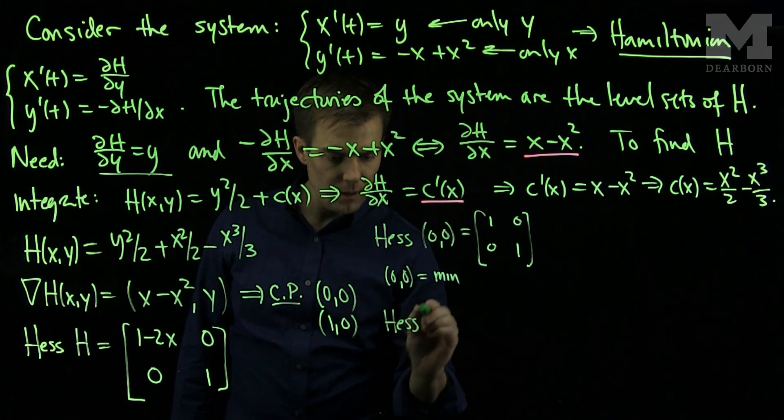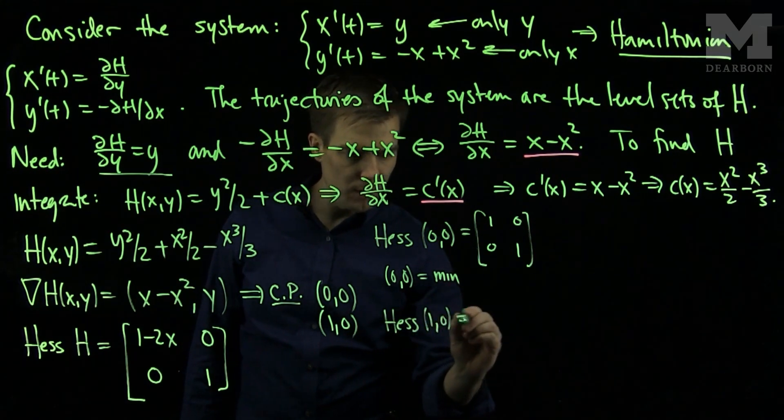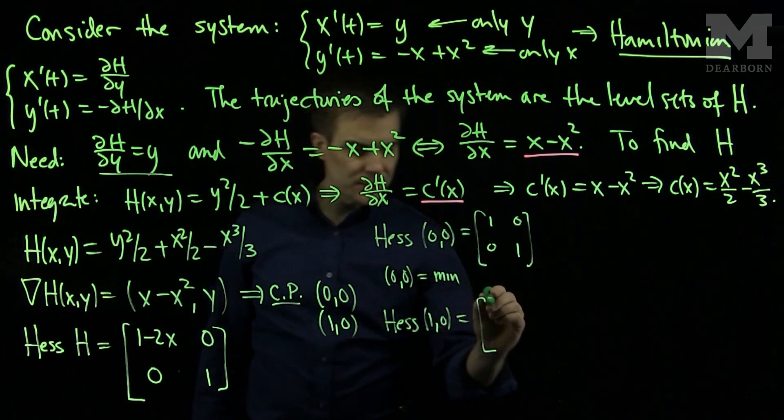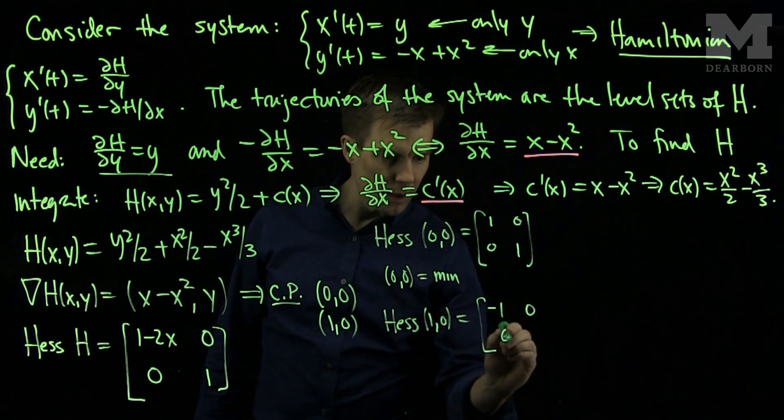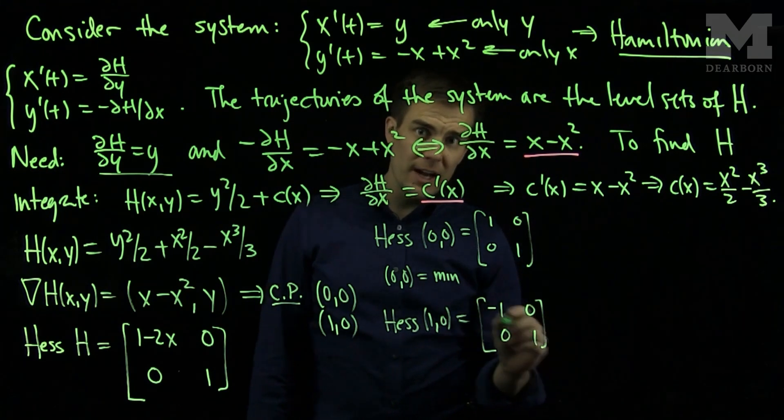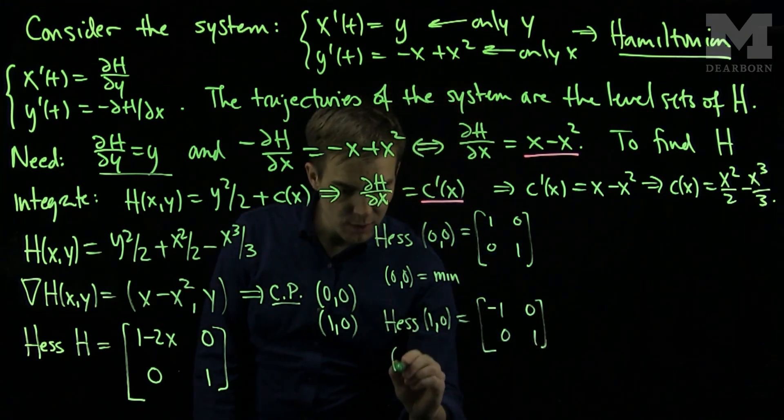The Hessian at (1,0) is the matrix [-1, 0; 0, 1]. I have alternating eigenvalues. So (1,0) is a saddle.